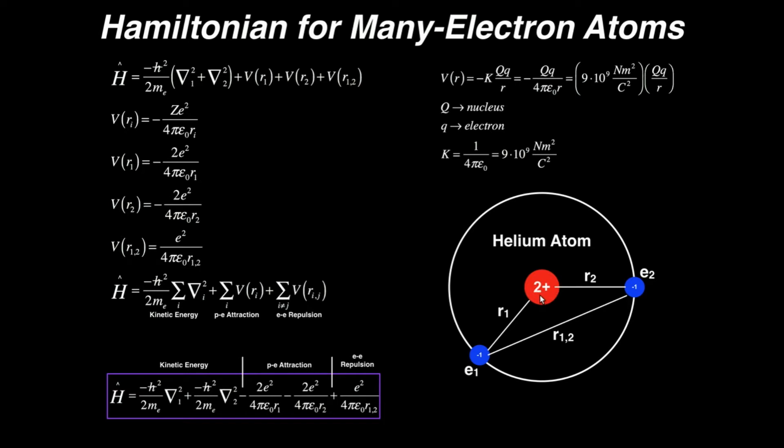In the case of helium, it has a charge of plus two, basically one for each proton. And it's surrounded by two electrons that each are some distance from the nucleus, and they are a distance from each other.